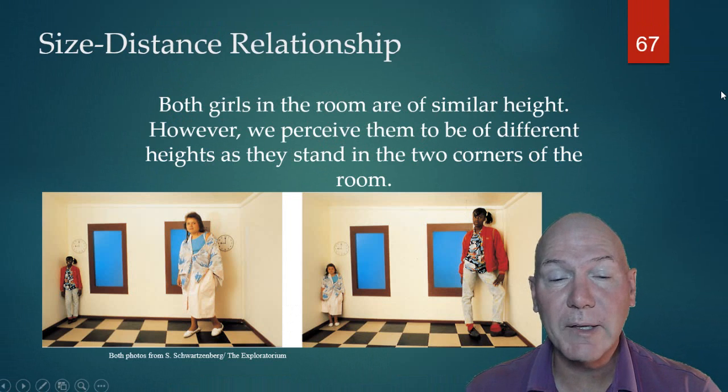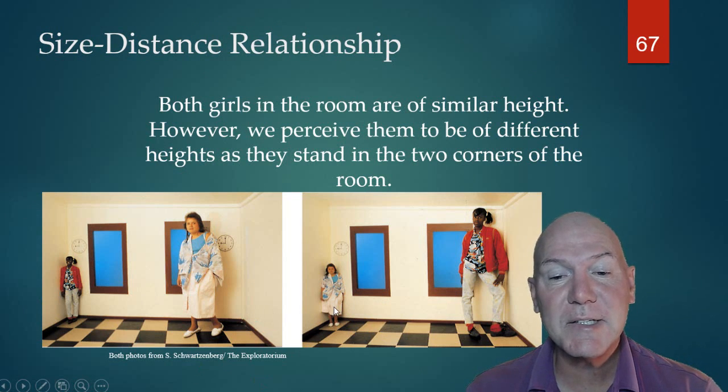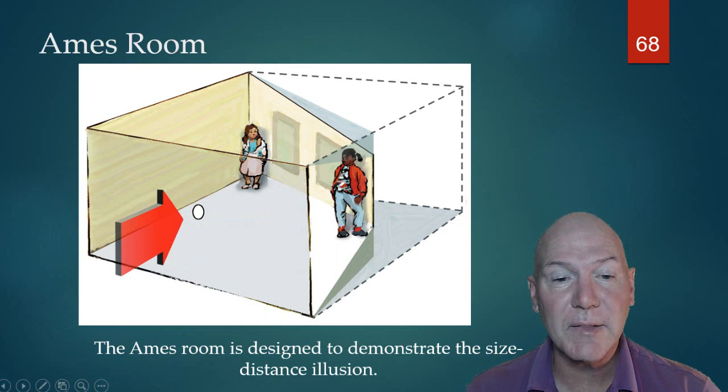Other things—Ames rooms are very cool things. They only work when you look at them from the front, but you can see how this girl looks very tiny, this one looks large. Now when they switch sides, this one looks tiny and this one looks large. So what they've done is create cues in here to suggest distance, and in fact they did do some distance. It's actually designed like this.